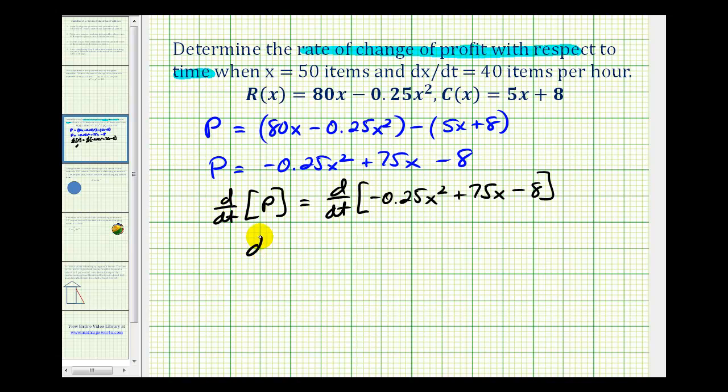So we have dP/dt equals the derivative of negative 0.25x² with respect to t, we're going to multiply by 2, it's going to be negative 0.5 times x to the first times dx/dt. Again, we're applying the chain rule. Plus the derivative of 75x with respect to t would be 75 times dx/dt. And the derivative of 8 would be 0.